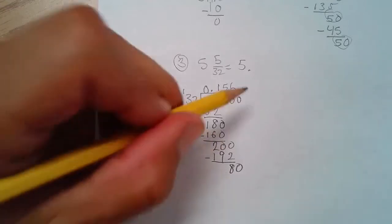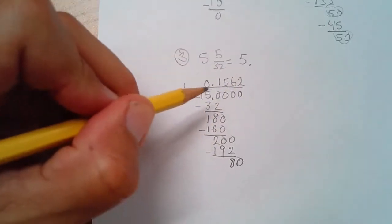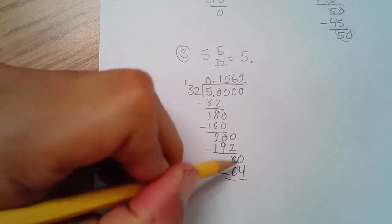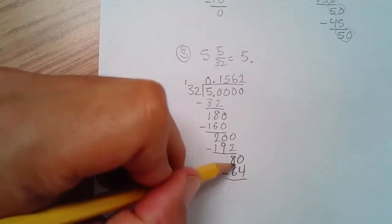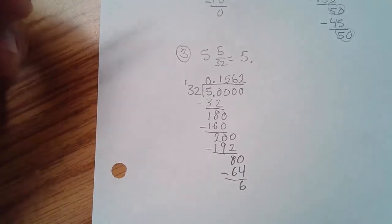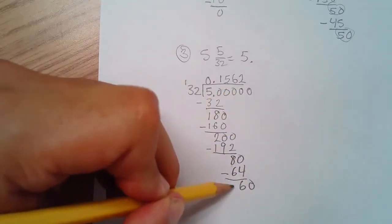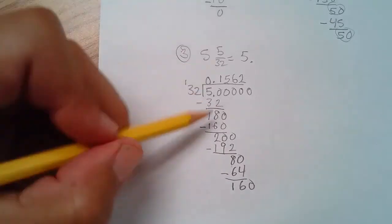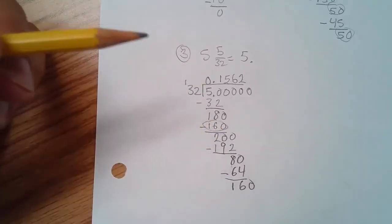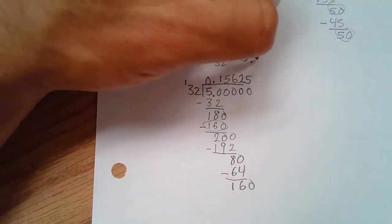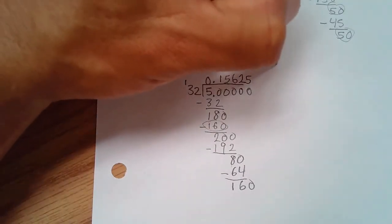And 32 goes into 80 two times. That's 64. And then what that's going to be? Six. And bring down another zero. And that's going to be a one. 160. And I've seen this before. Right here, I had 160. So this is going to be five times. 5.15625.